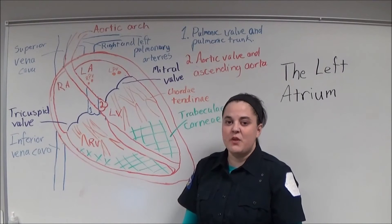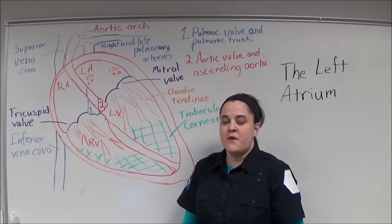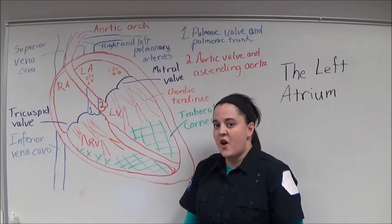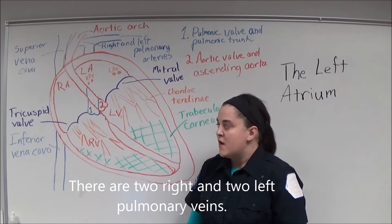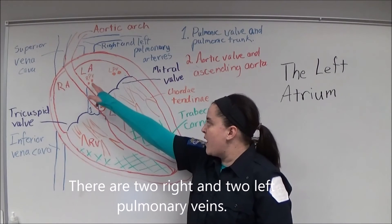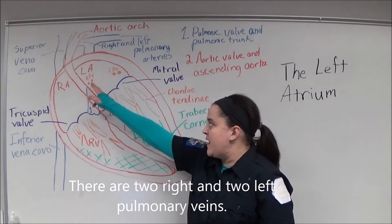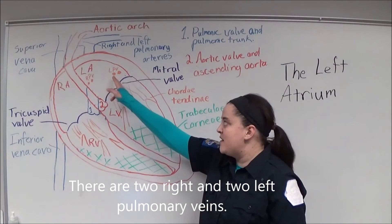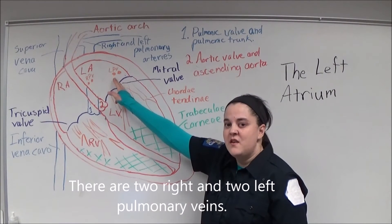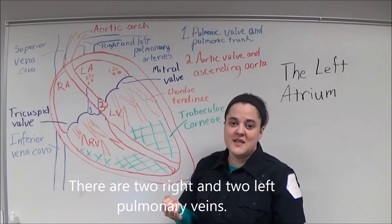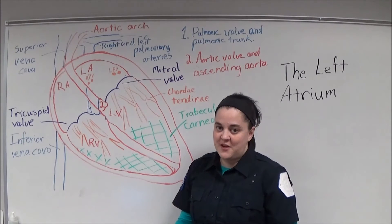Oxygenated blood returns from the lungs to the heart through the right pulmonary vein and the left pulmonary vein, which empty into the left atrium.